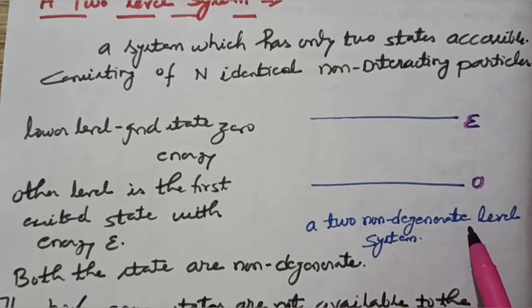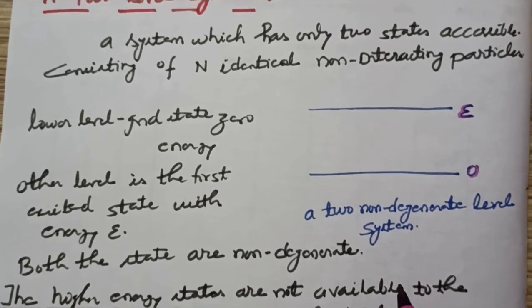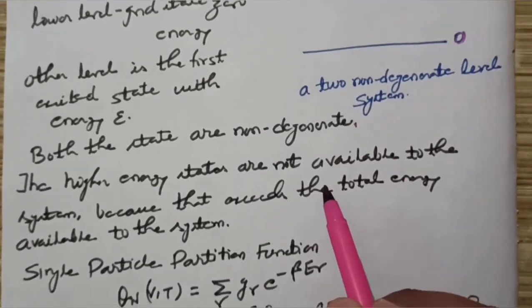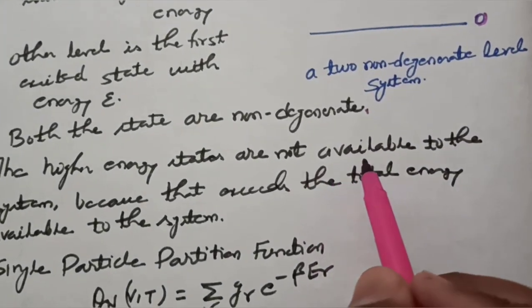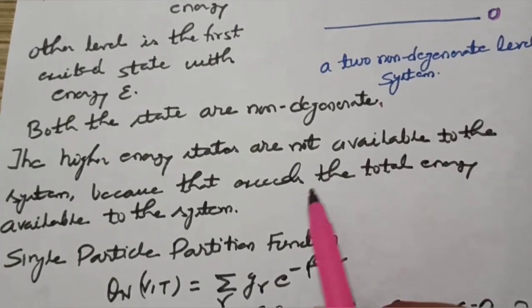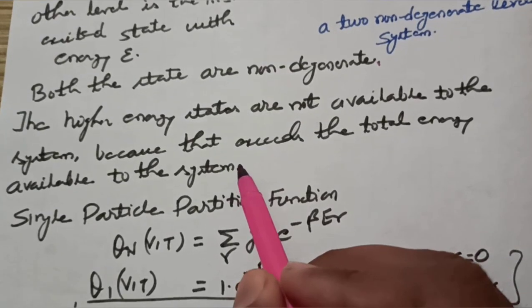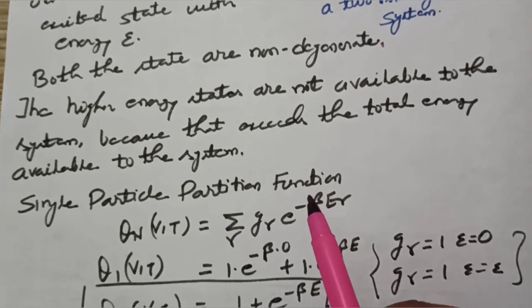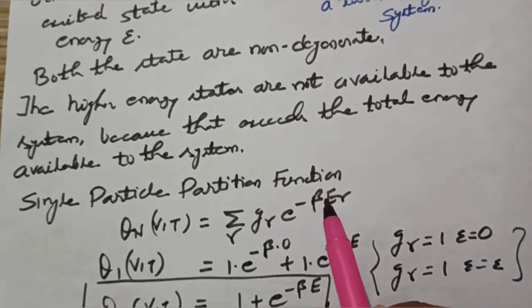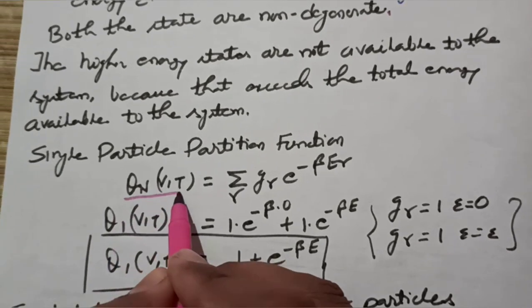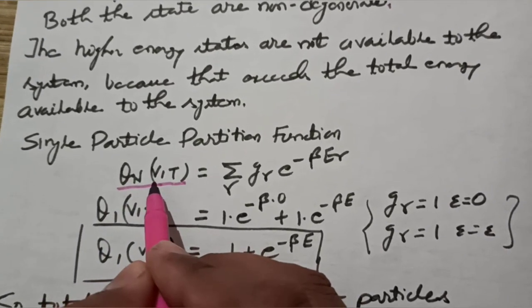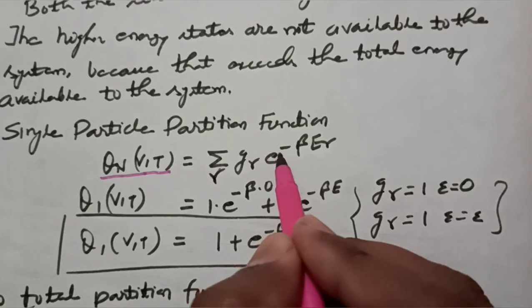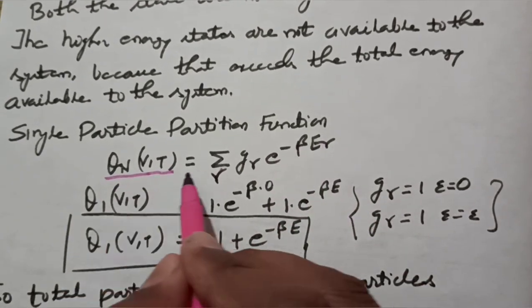We are discussing this as an application of the canonical ensemble, assuming both levels are non-degenerate. The higher energy states are not available to the system because they exceed the total energy available. Now we calculate the partition function: Q(N,V,T) = summation over r of g_r times e to the power minus beta times E_r.